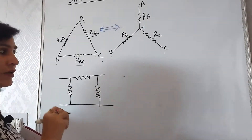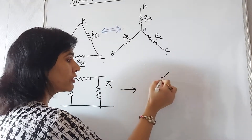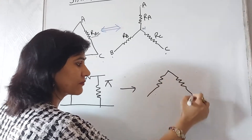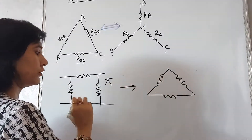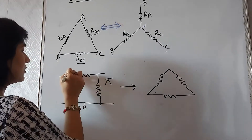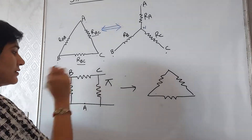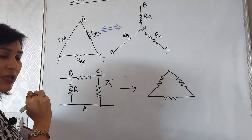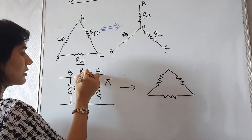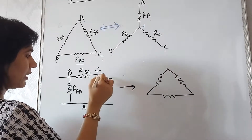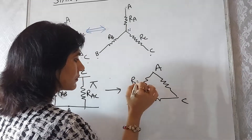We may have pi connections in the circuit, and those pi connections are converted into delta connections. Whenever we find pi connections in the circuit, we convert them into delta. We make three points in the pi connection — A, B, and C — and give names to the resistances: the resistance between A and B is R_AB, between B and C is R_BC, and between A and C is R_AC. Similarly for delta, the same naming applies.